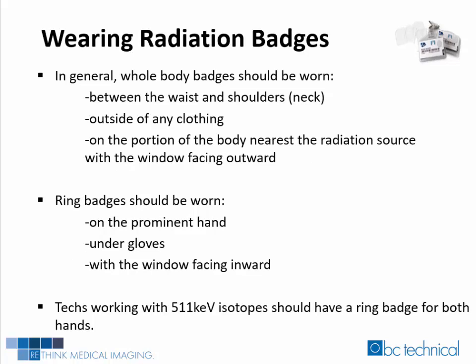Let's talk about wearing radiation badges. In general, whole body badges should be worn between the waist and shoulders, outside of any clothing, and on the portion of the body nearest to the radiation source with the window facing outward. Ring badges should be worn on the prominent hand, under gloves, and with the window facing inward, toward the source. Technologists working with 511 keV isotopes should have a ring badge for both hands, and they should be changed monthly.